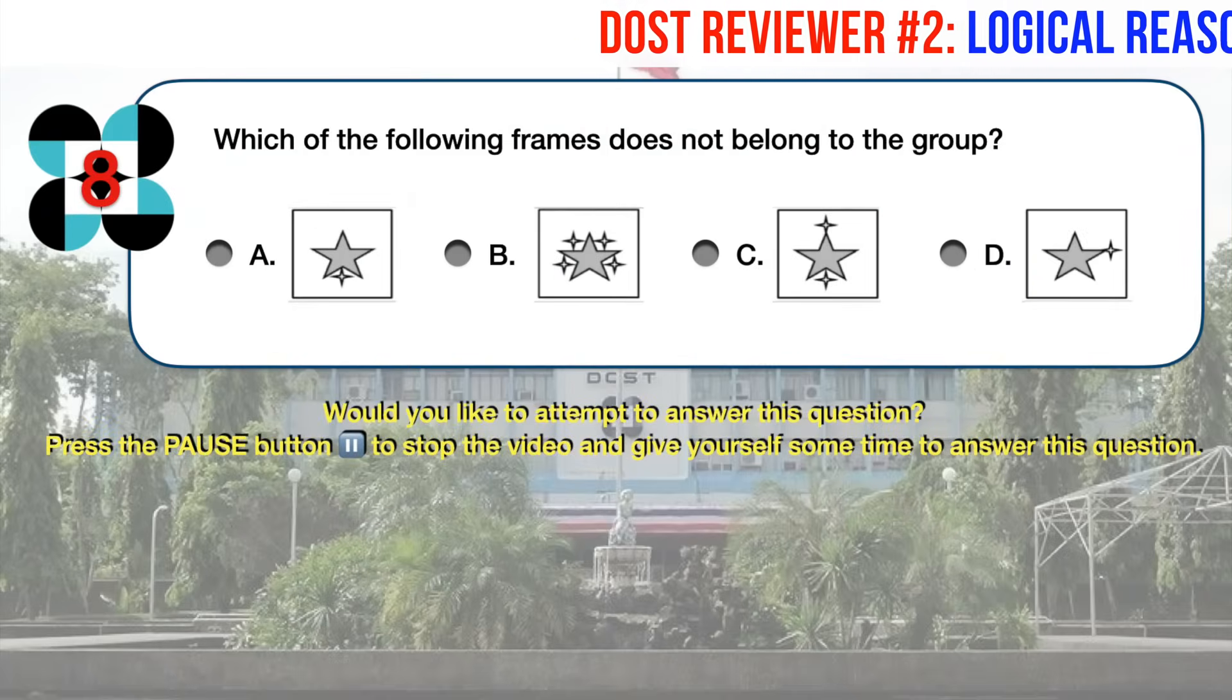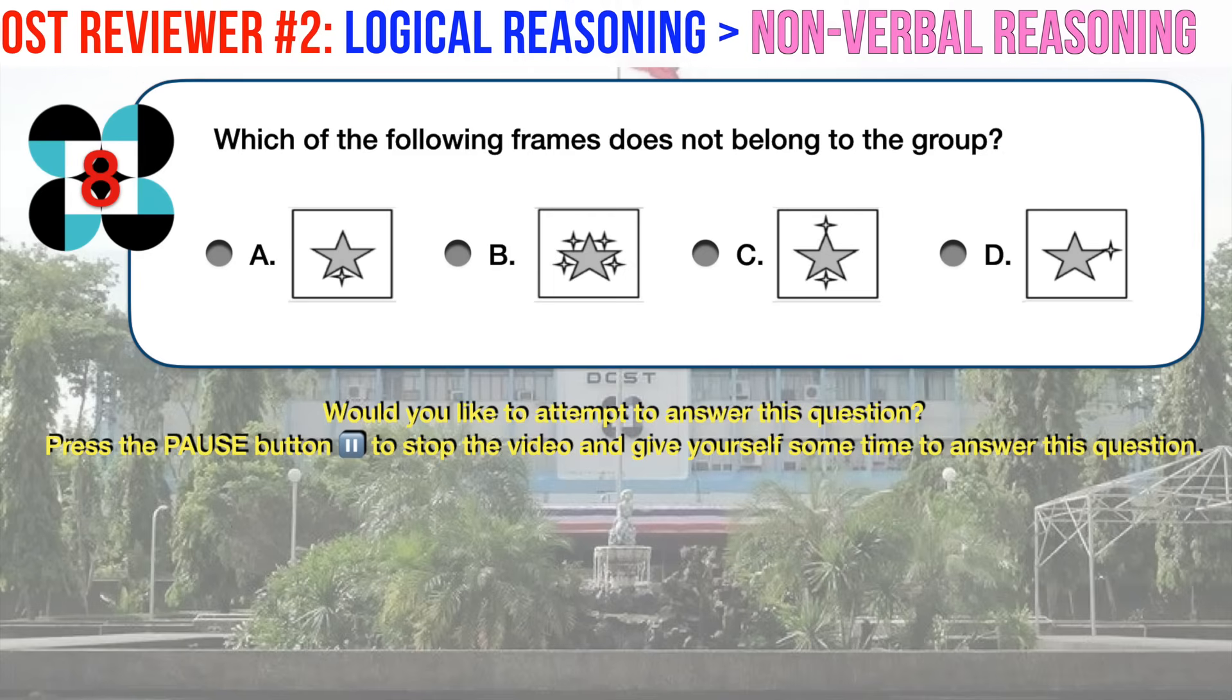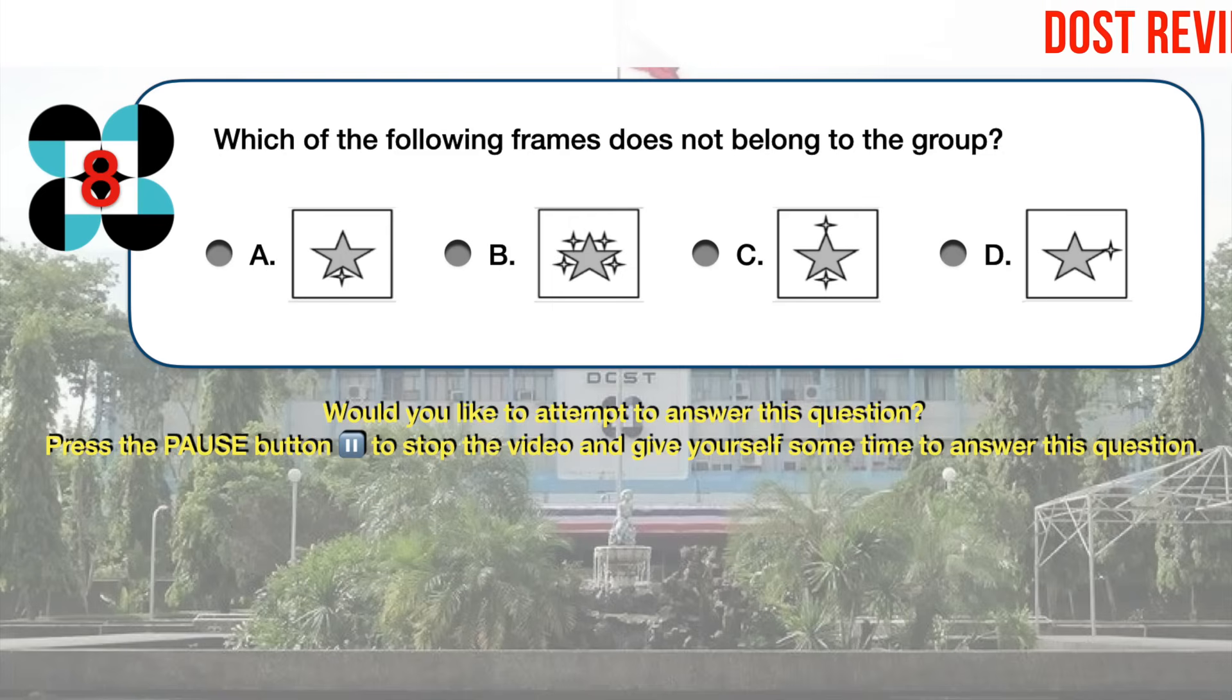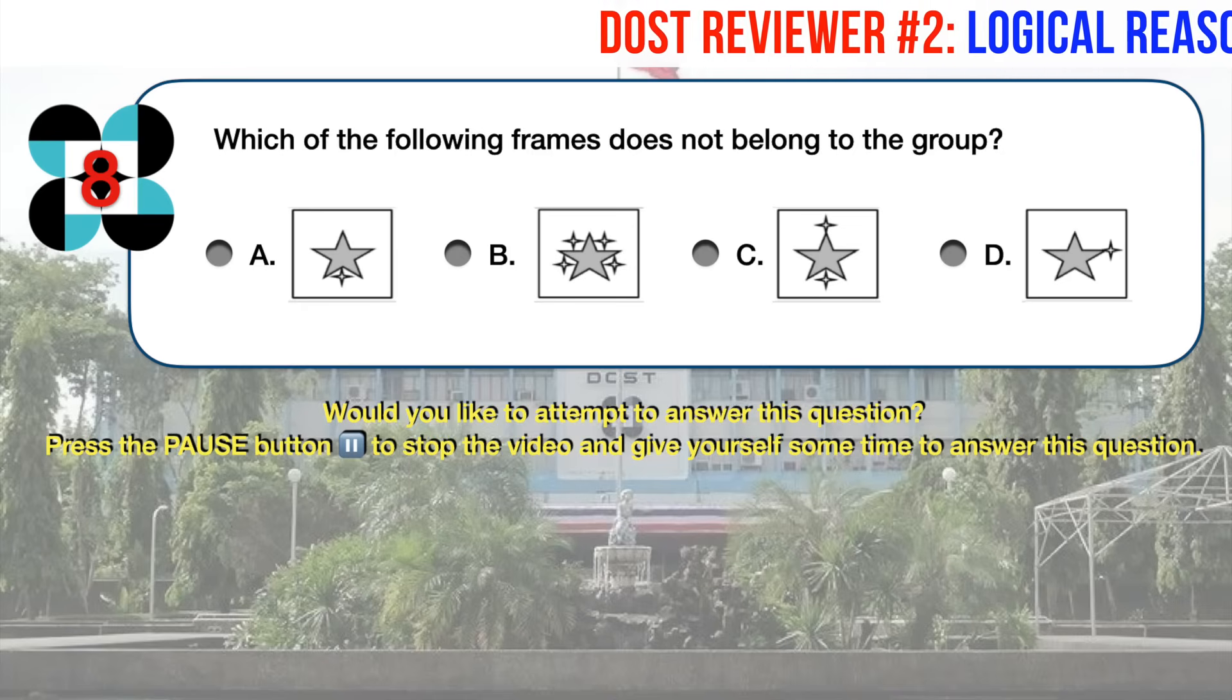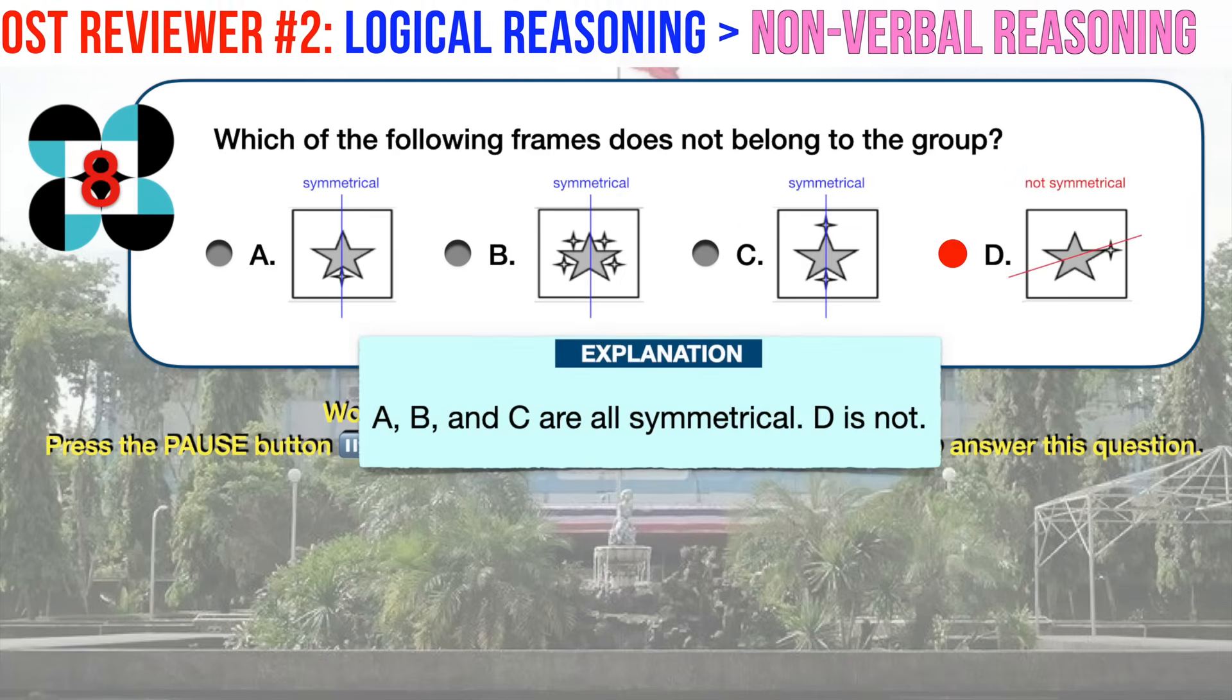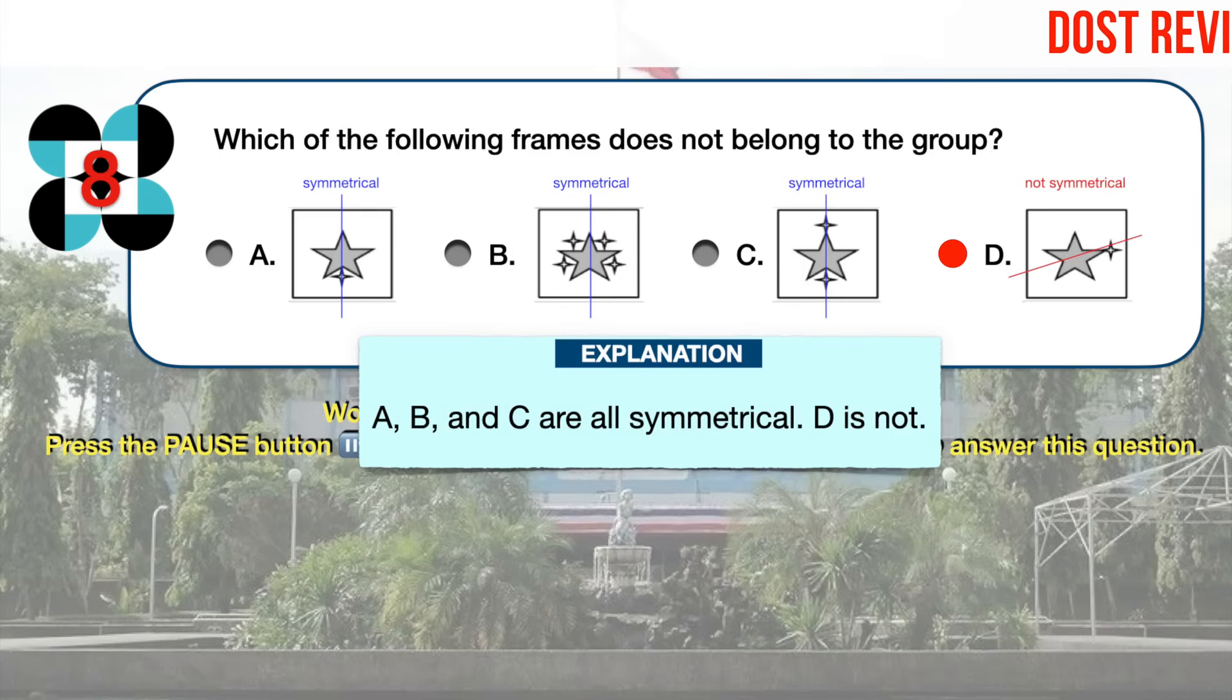Nonverbal reasoning number eight. Which of the following frames does not belong to the group? The correct answer is D. All of the answer choices except D are symmetrical, which means that they can be crossed somewhere by a straight line that will divide them into two mirror images. Such is not possible for answer choice D.